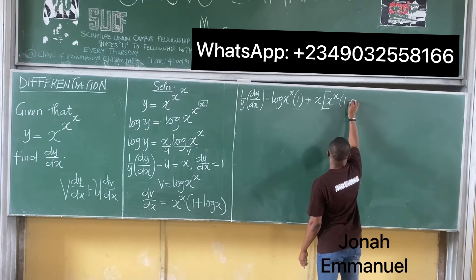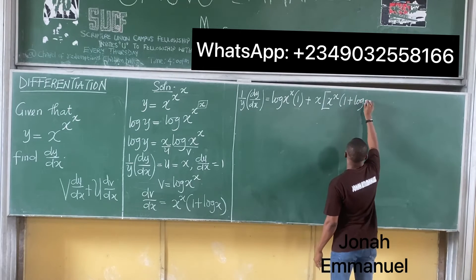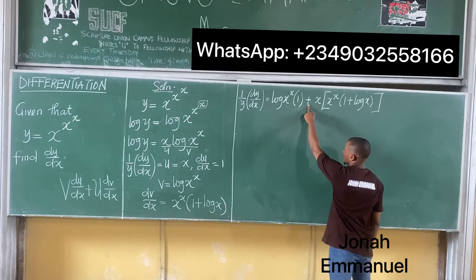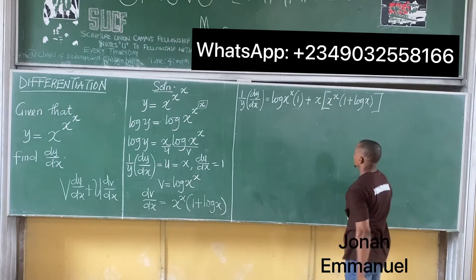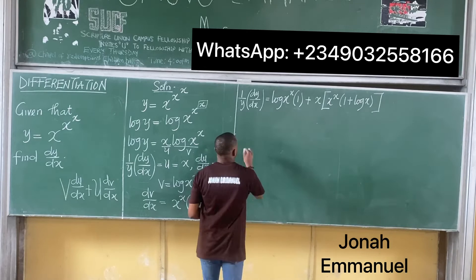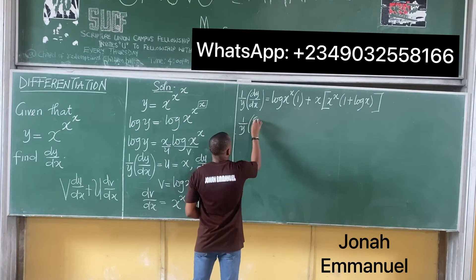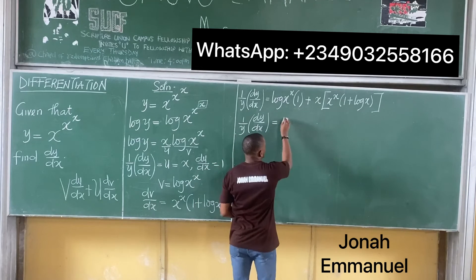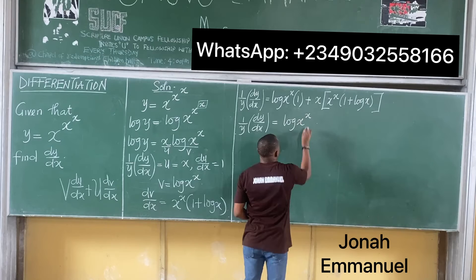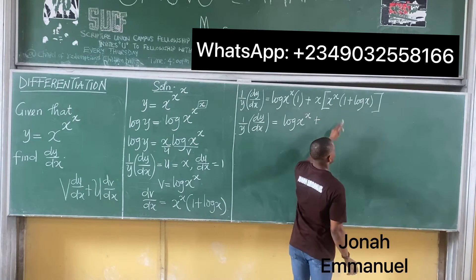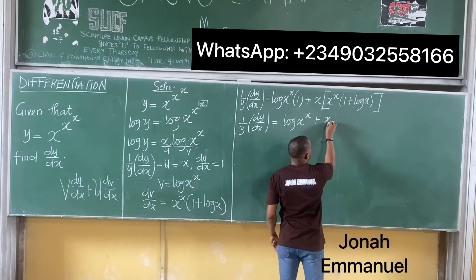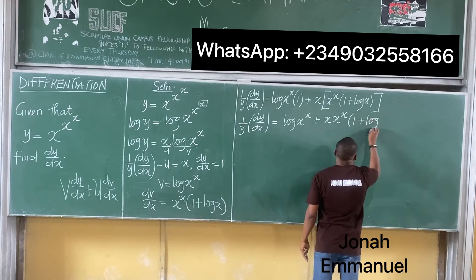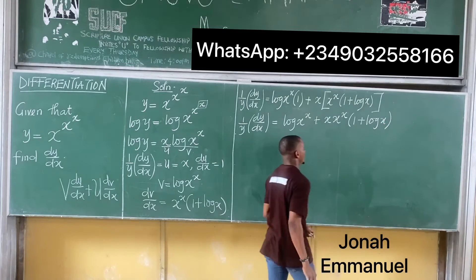Simplifying this expression: 1/y · dy/dx equals log(x^x)/x plus x multiplied by x^x into (1 + log x). The first term is simply log(x^x)/x, and the second term becomes x^x times (1 + log x).